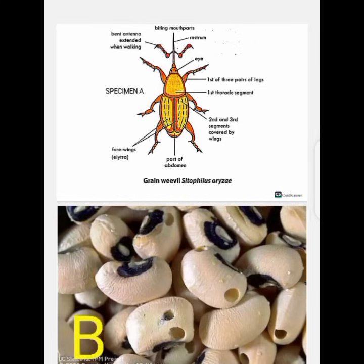If you look at the levels carefully, you can see there are four wings. Part of the abdomen is covered by the wings — the second and third segments are covered by the wings. The head region is on the right, and then we have the first three pairs of legs at the front. You can also see the rostrum, which is used for piercing food products like legumes — peas, cowpeas, lentils, and so on.